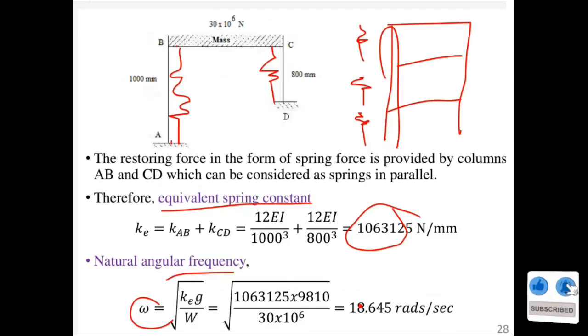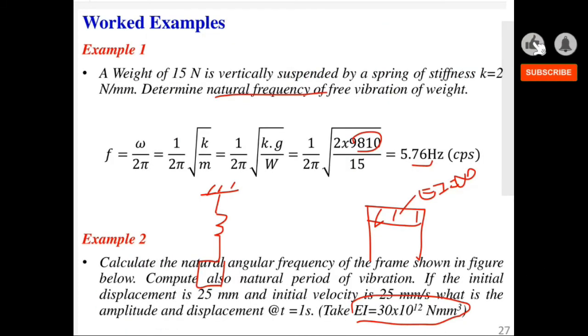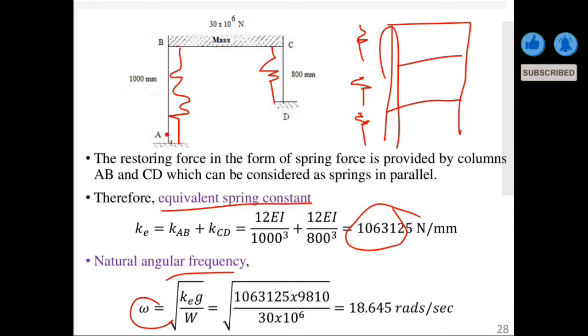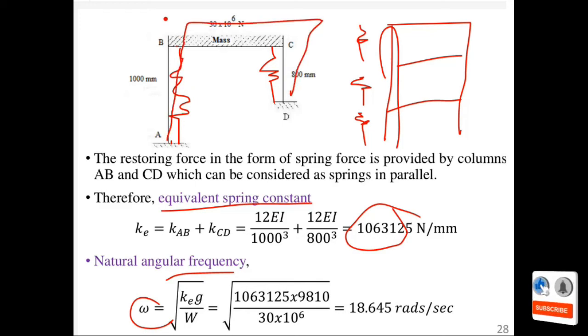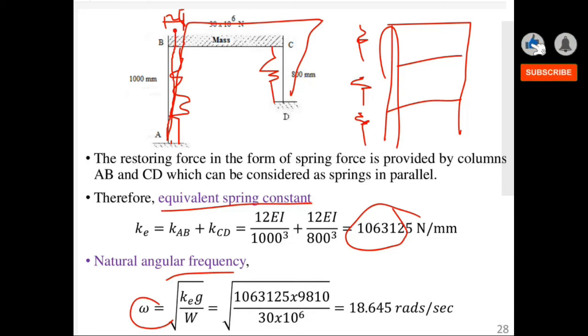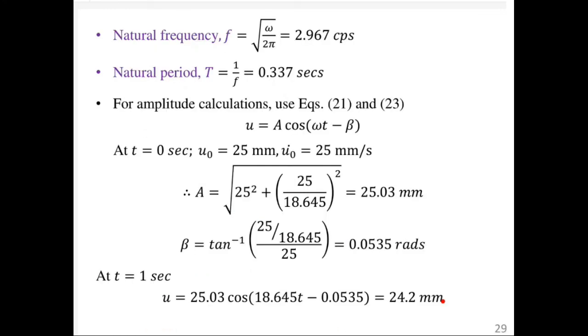So what does this mean? Initially, for the displacement to occur, this structure is deformed 25 millimeters and then released. At one second, we want to see what the displacement is. It's going back to its original position - that's why the value computed here is less than the initial displacement, because we have released the structure and it's going back to equilibrium.